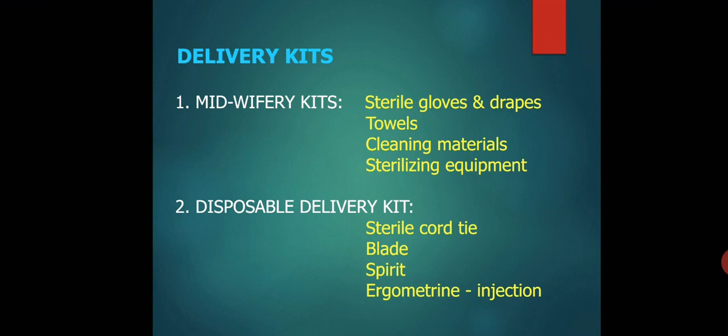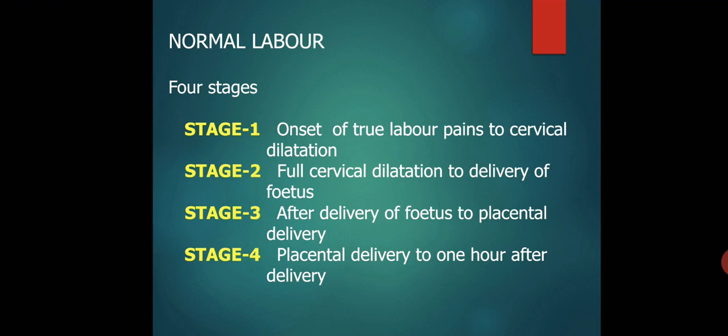Delivery kits are very important and should be available at the place of delivery. Midwifery kits include sterile gloves and drapes, towels, cleaning material, and sterilizing equipment. Disposable delivery kits include the sterile cord tie, blade, spirit, and ergometrine injection.